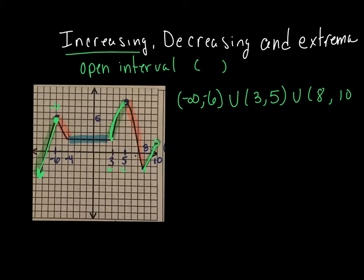Now, decreasing. Decreasing is every place in this graph where the graph is going from left to right heading down. So here and here. So the decreasing parts of those functions, again, my x values go from negative 6 to my x value here, which is negative 4, always open parentheses. And the next one is down here at 5 to 8.